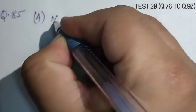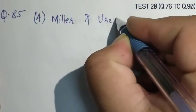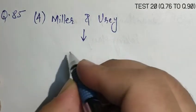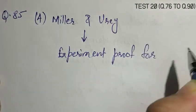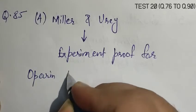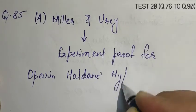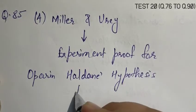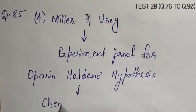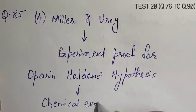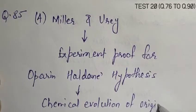Question number 85, Contribution in chemical evolution in origin. A. Miller, B. Darwin, C. Lamarck, D. Ellis. Correct answer is A. Miller. Miller and Urey provided experimental proof for Oparin-Haldane hypothesis. That was then converted to theory of chemical evolution or theory of origin of life.